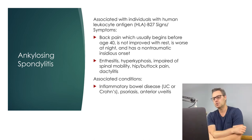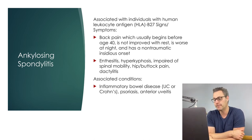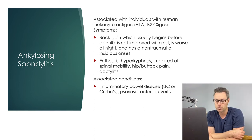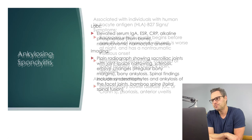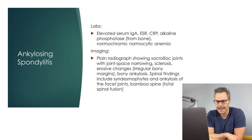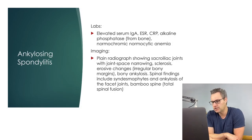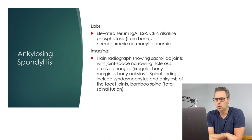Patients can also have dactyitis — severe inflammation of the finger and toe joints, sometimes called sausage fingers. Hyperkyphosis, impaired spinal mobility, and hip or buttock pain are also commonly seen. Conditions associated with ankylosing spondylitis include inflammatory bowel disease (ulcerative colitis or Crohn's disease), psoriasis, and anterior uveitis. Labs may show elevations in serum IgA, ESR, CRP, and alkaline phosphatase — linked to bone pathology, not the liver. Patients may also have normochromic, normocytic anemia.